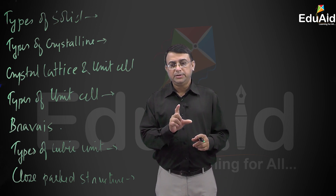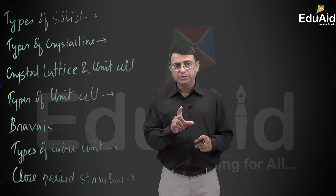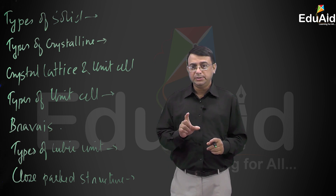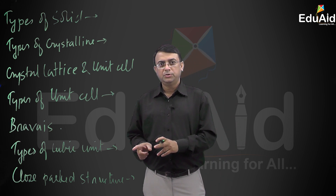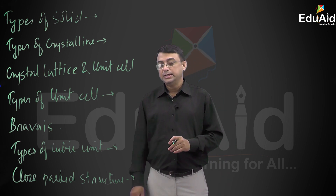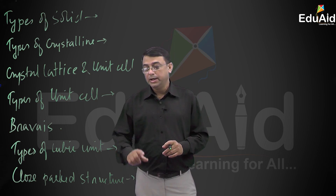Hexagonal closed packed in three dimensions is called HCP. Cubic closed packed in three dimensions is called CCP.